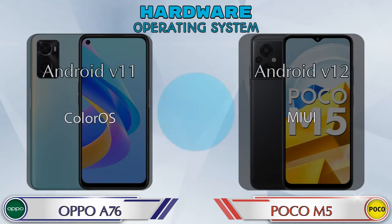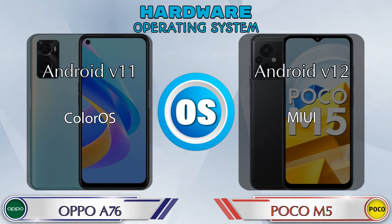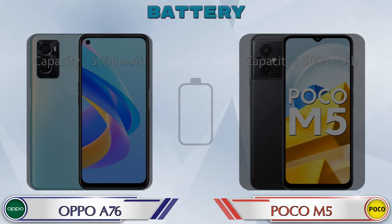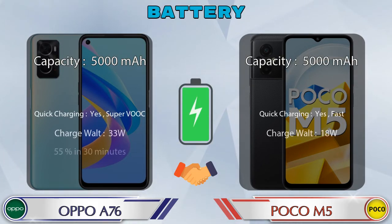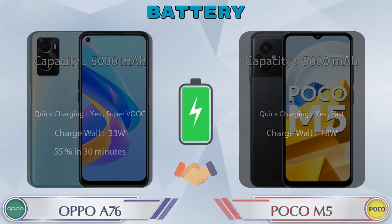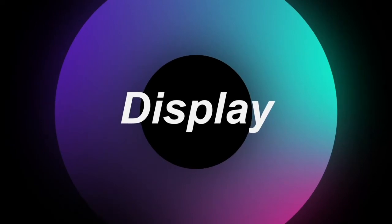If we talk about operating system, A76 runs Android v11 and Poco M5 runs Android v12. Here are the complete details about battery. Now let's see the information about display.